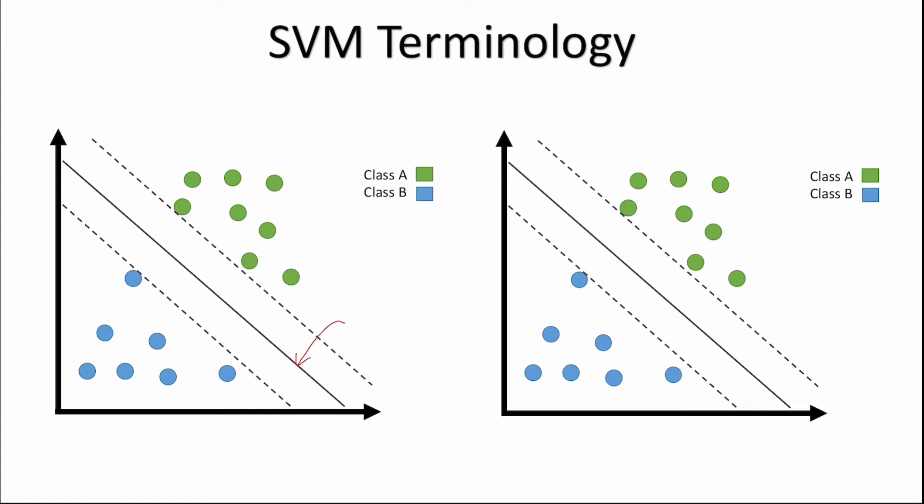So one thing to note is that in two-dimensional space, so for example in our example here, we have two features, say x1 and x2, our hyperplane will be one-dimensional, so it's just a straight line.